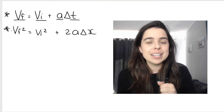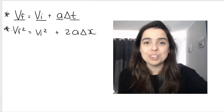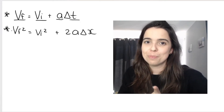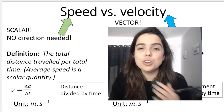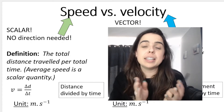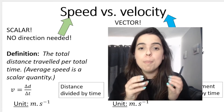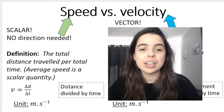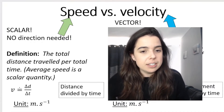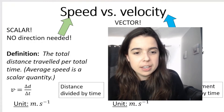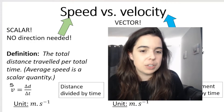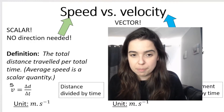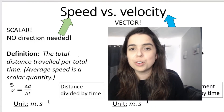Let's jump into defining speed, defining velocity, and calculating speed versus velocity. You'll understand the differences better when we approach this with an example. Speed is a scalar, which means no direction is needed, and the definition for speed is the total distance traveled per total time. So average speed is a scalar quantity, and speed is equal to distance divided by time. Sometimes we refer to this as S for speed. The unit is meters per second.